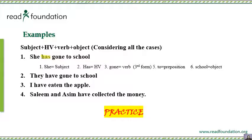Let's classify this sentence: 'She' is your subject. 'Has' is your helping verb — singular subject takes 'has'. 'Gone' is your verb — the third form. In all perfect tenses — present perfect, past perfect, or future perfect — the verb is always in the third form. The only difference between them is the helping verb. 'To' here is a preposition, and 'school' is a noun acting as the object.